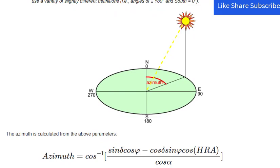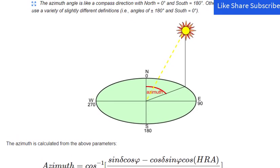The azimuth angle is like a compass direction with north equal to zero degrees and south equal to 180 degrees. Other authors use a variety of slightly different definitions, such as angles of plus or minus 180 degrees with south equal to zero degrees.